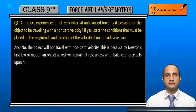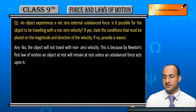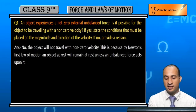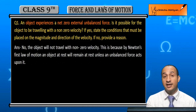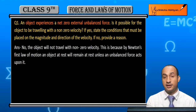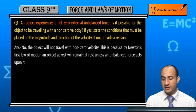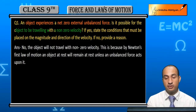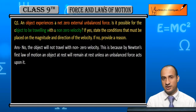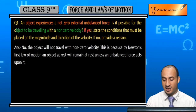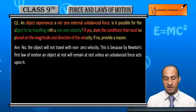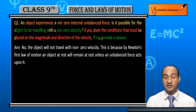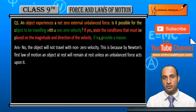Now students, see the first question. The question is: can an object experience a net zero external unbalanced force? Is it possible for the object to be traveling with non-zero velocity? If yes, state the condition regarding the magnitude and direction of the velocity. If it is not possible, provide the reason why not.